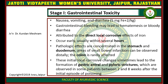In Stage 1, gastrointestinal toxicity, the symptoms of nausea, vomiting, and diarrhea are found. Gastrointestinal bleeding may lead to hematemesis or bloody diarrhea, attributed to the direct local corrosive effect of iron. It occurs usually within several hours. The pathologic effects are concentrated in the stomach and duodenum; areas of small bowel infarction can be observed, while the colon is rarely affected.